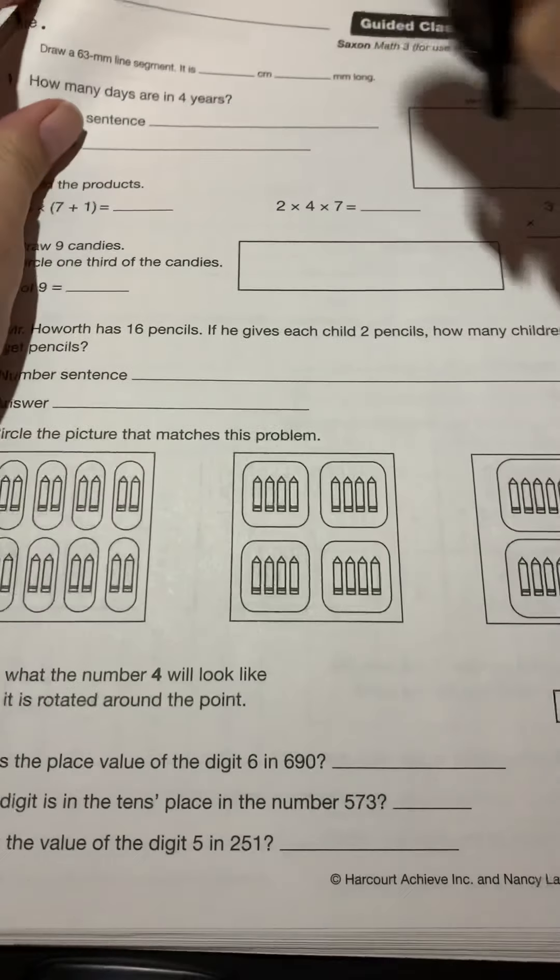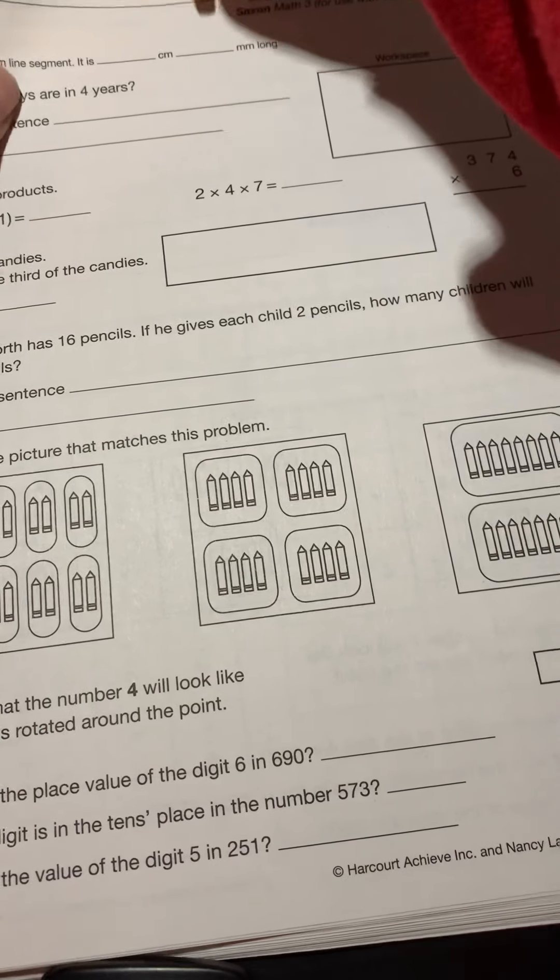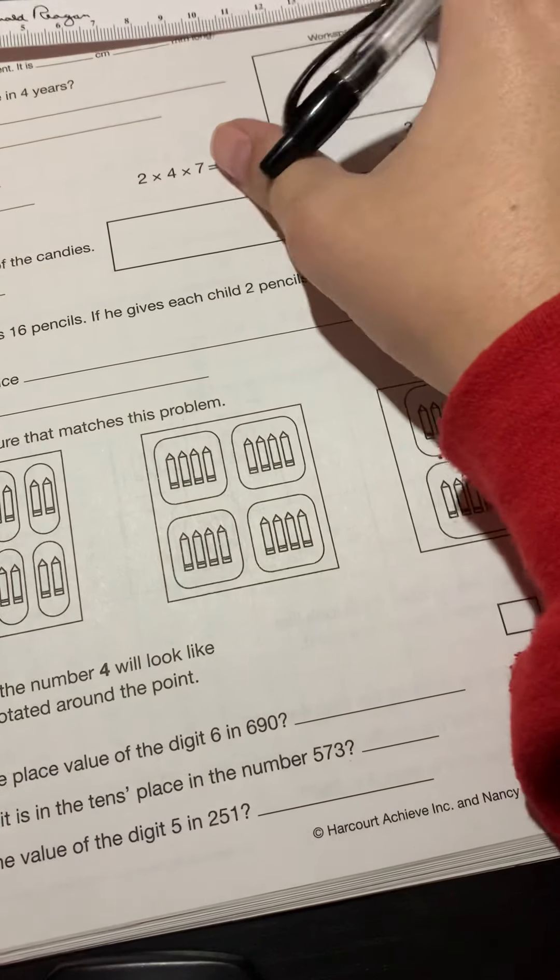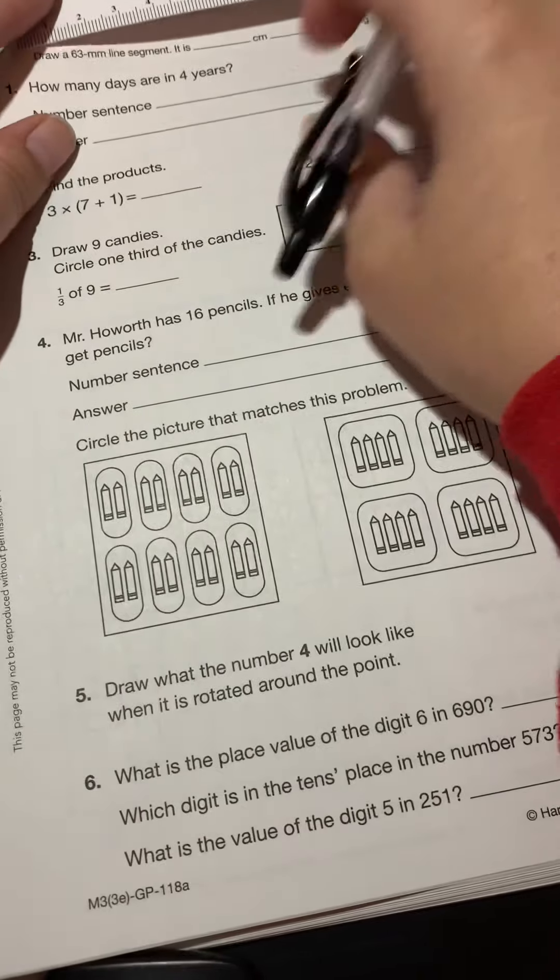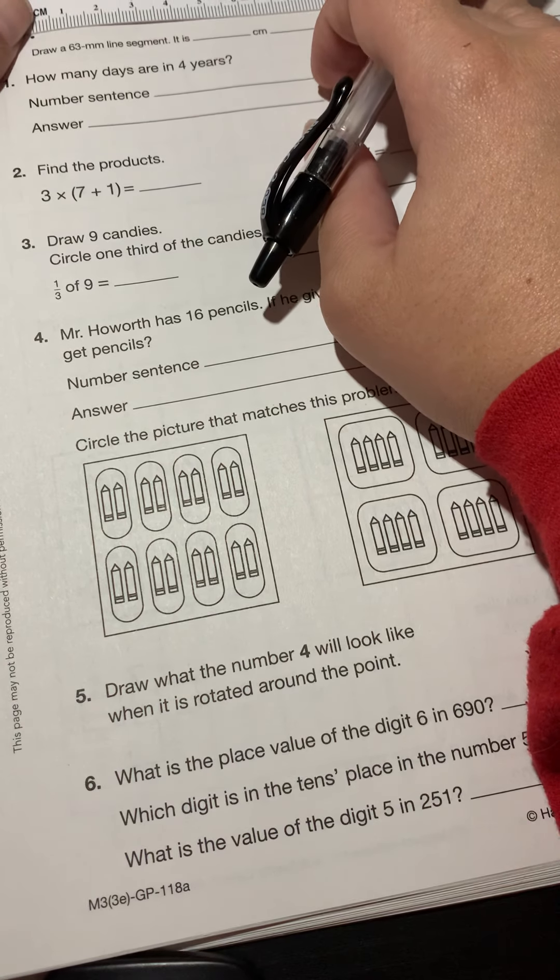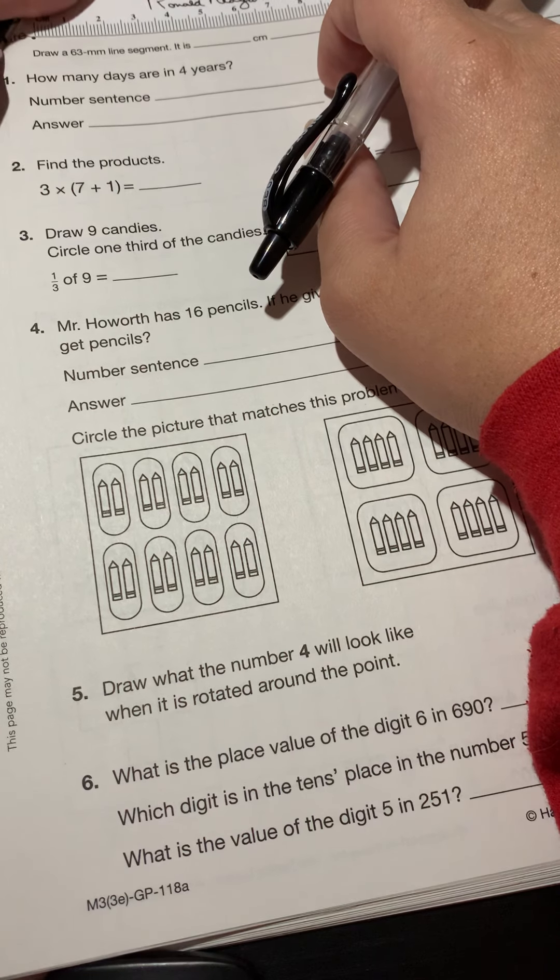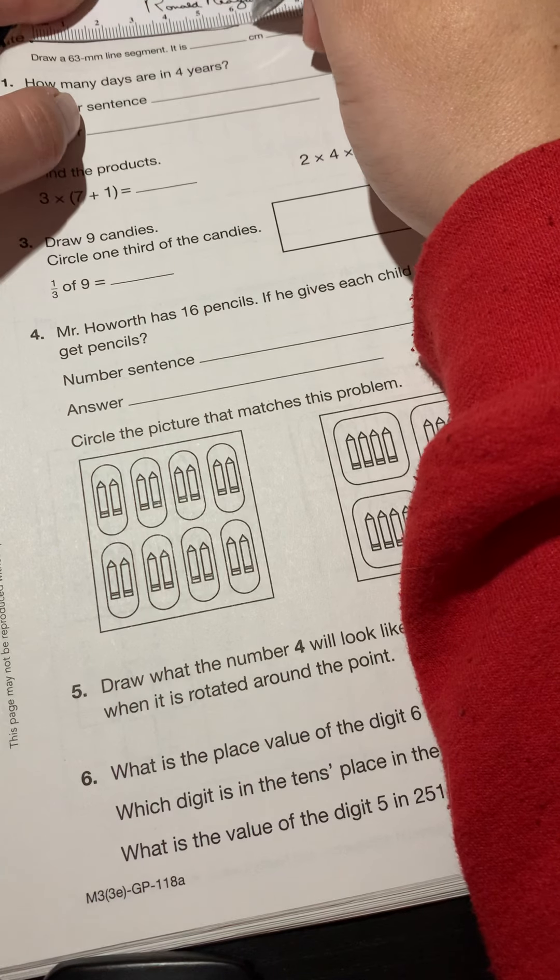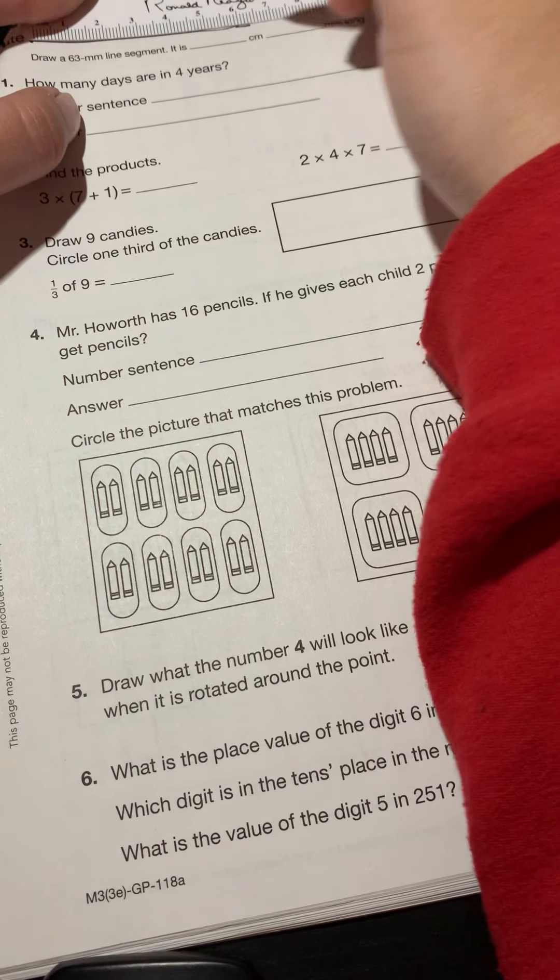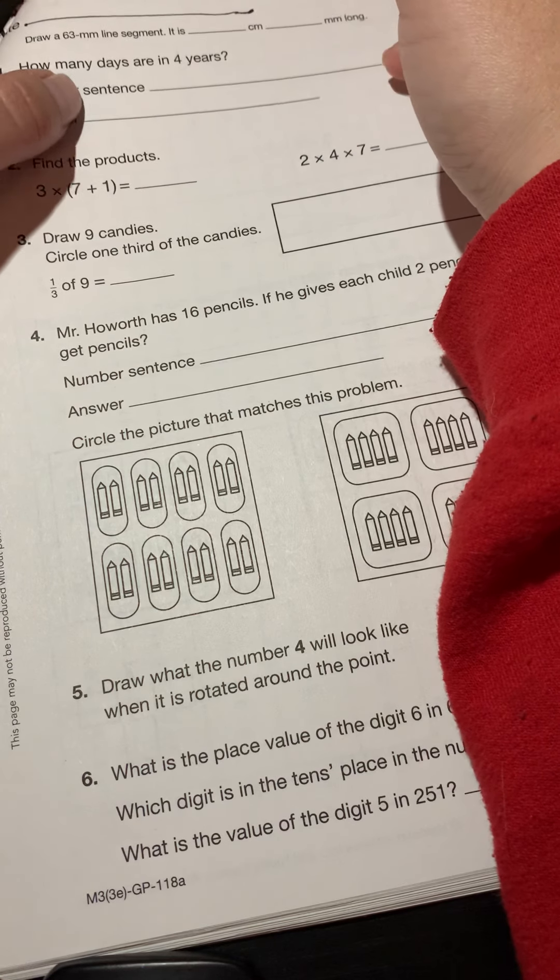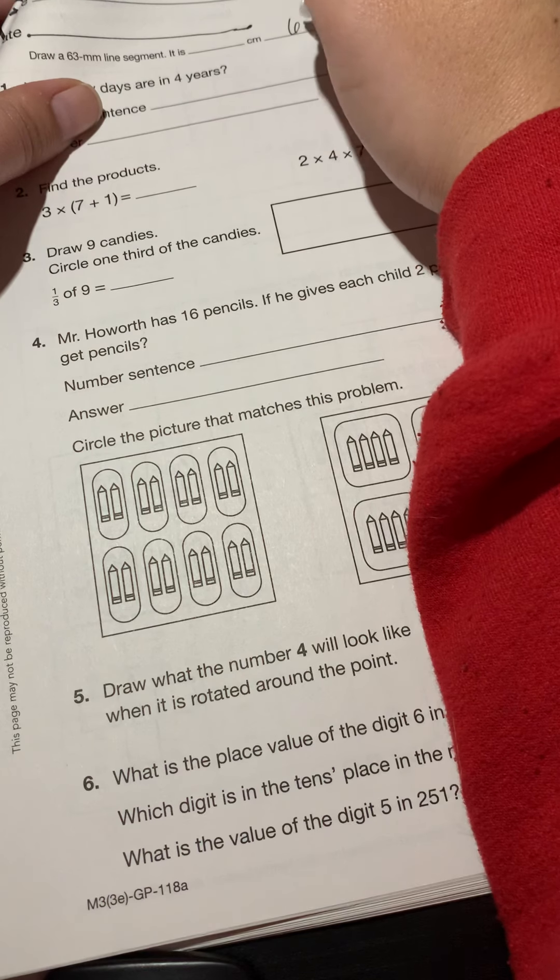So moving along, we only have one more worksheet that we need to get through. So let's take a look starting again by looking at millimeters. We're going to draw our line up here. Here we go. So we need to make sure we line up our line and we're doing 63 millimeters. So we're going to go up to the six and then we have to go up three lines. One, two, three. And that's where we'll draw our circle. Hope your line came out straighter than mine.